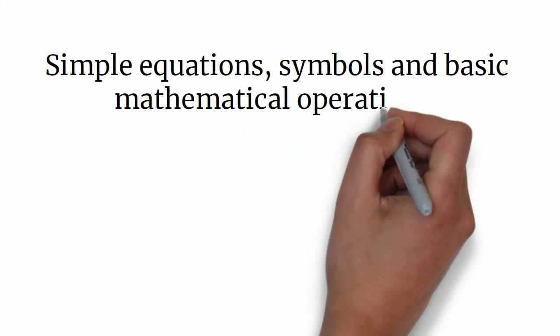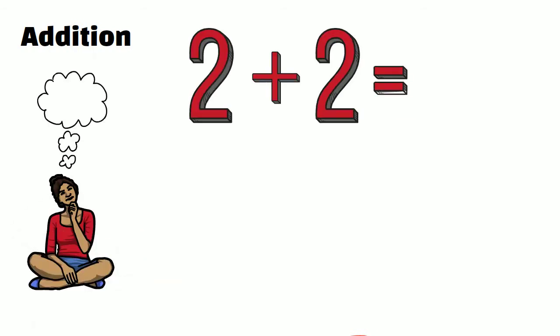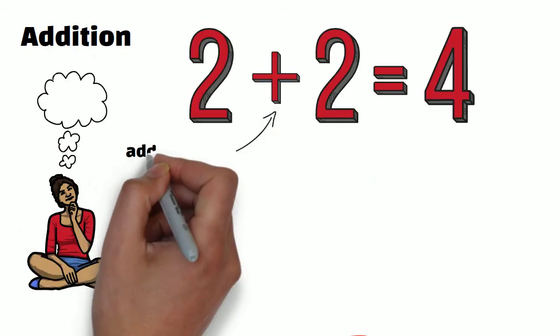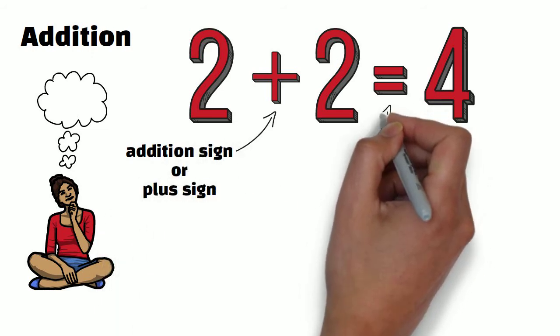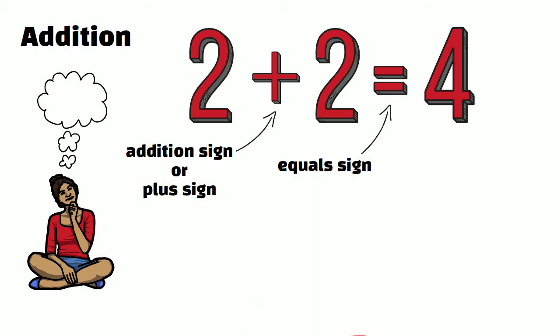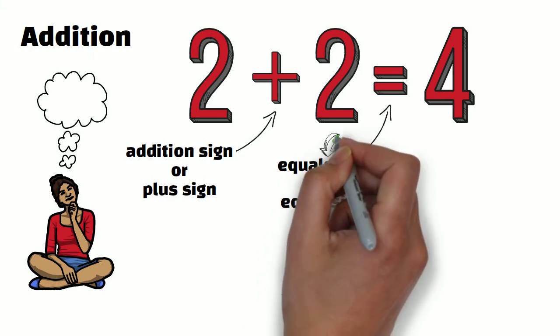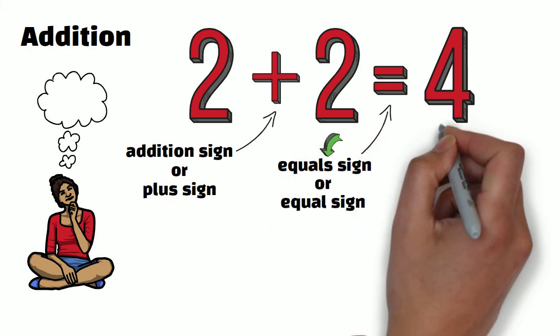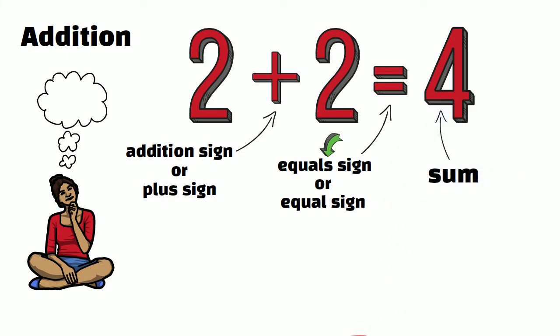We'll start with simple equations and symbols, and basic mathematical operations. First: addition. You will probably know this one. The symbols here are the addition sign, or the plus sign, and the equal sign — sometimes also called the equals sign. The result or the total of an addition equation is called a sum.